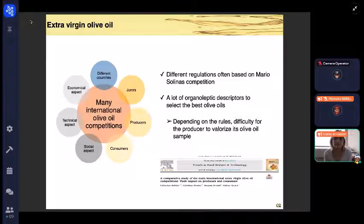In the majority of these competitions, producers may choose the category in which their oil sample will compete. They must register knowing the nature of the fruitiness of their oil—green or ripe—as well as the intensity of this fruitiness: intense, medium, or light.